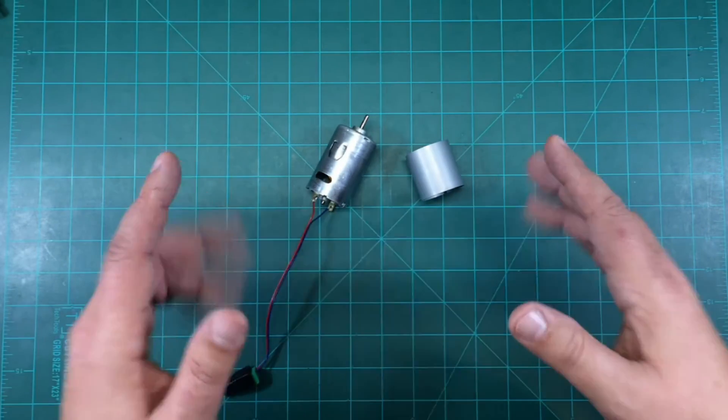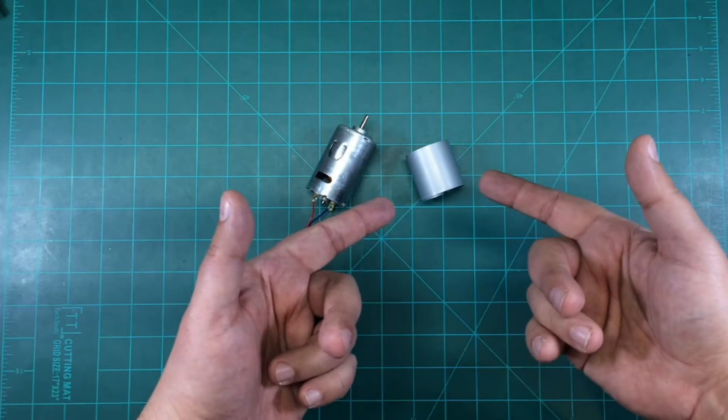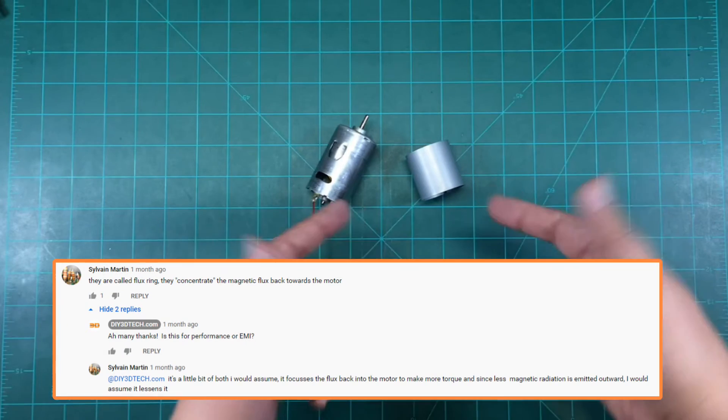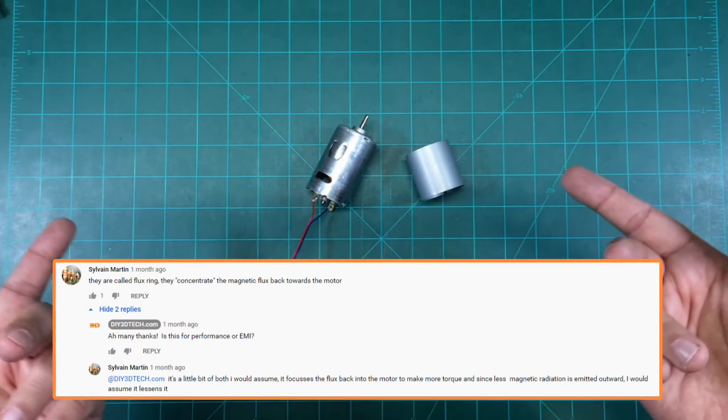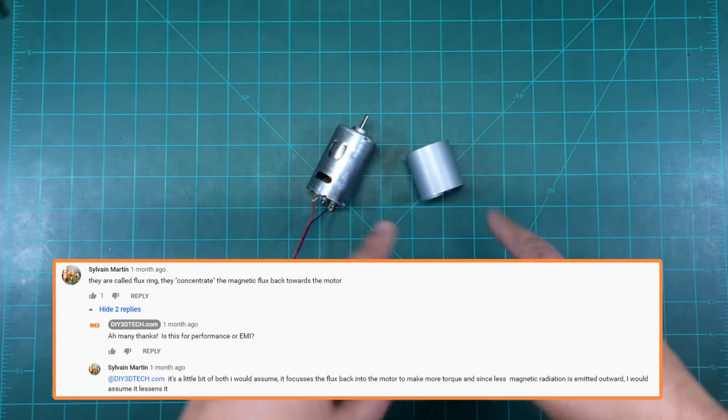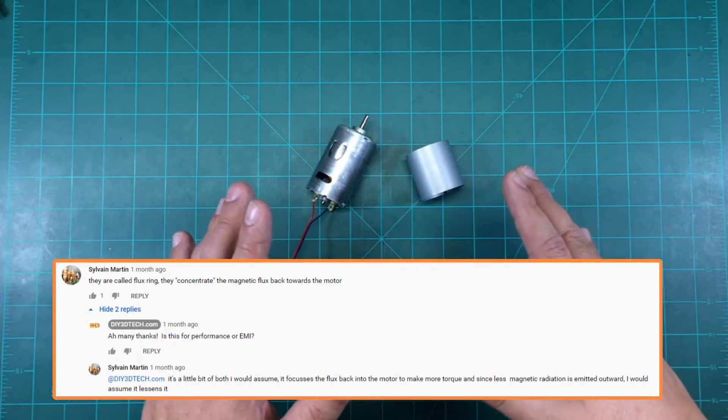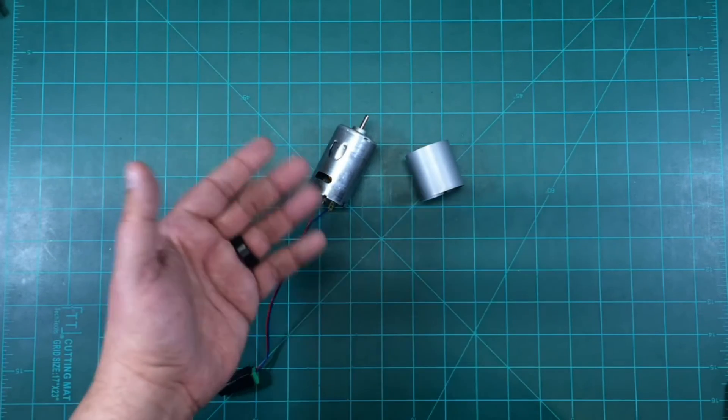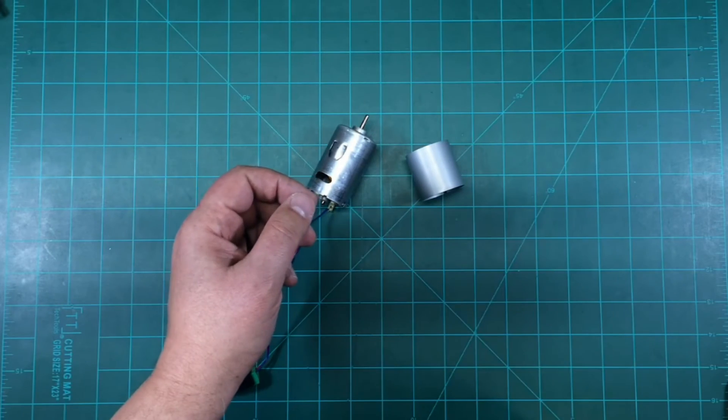So in a prior episode, I asked you, the viewers, what's this ring? And I got an answer. It's a flux ring, not to be confused with a flux capacitor unfortunately, but it is a flux ring, and what it's designed to do is go around this DC motor and compress the magnetic field to increase the torque.